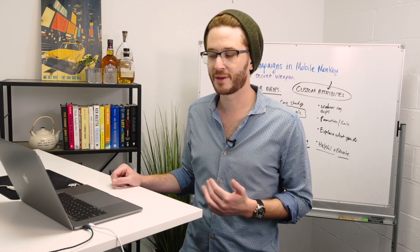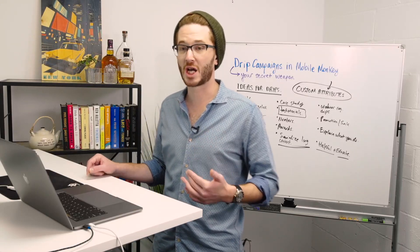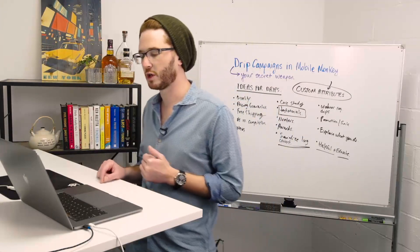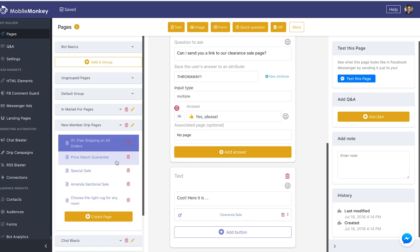This drip is probably even a little bit longer than I'd typically suggest, but it's been working really well. When I'm building the pages, I don't decide how long afterwards I'm sending out these drips — I just build out the bot flows and configure those settings later in the marketing automation tool.